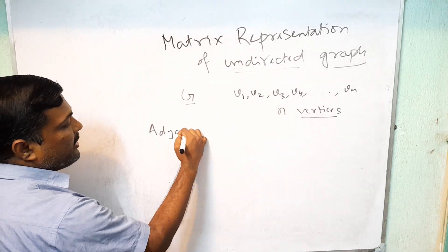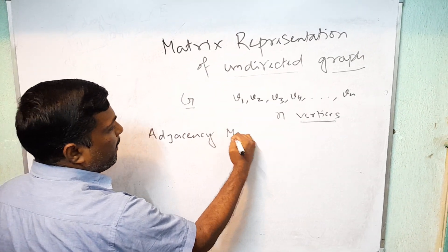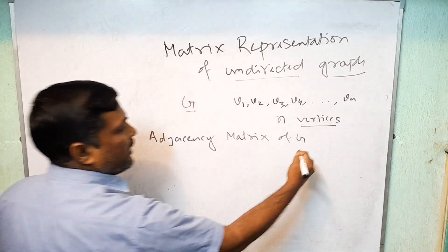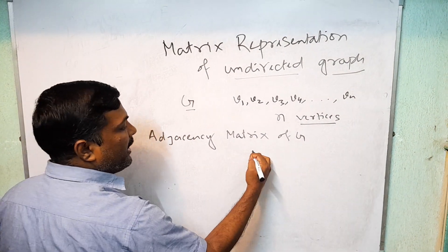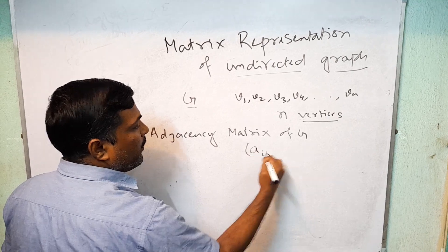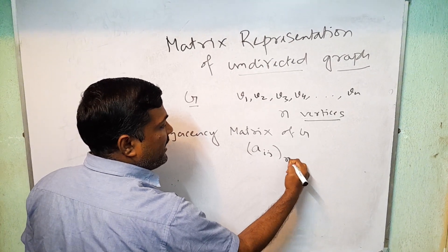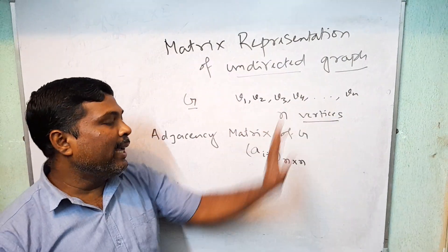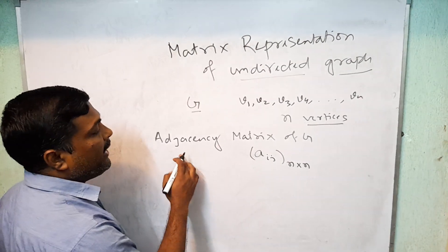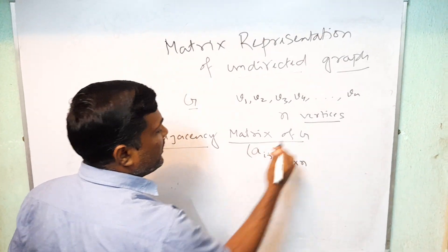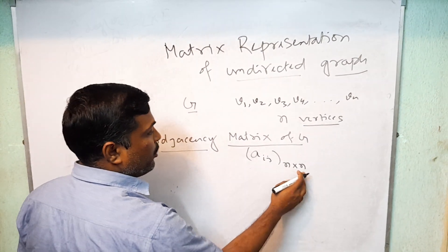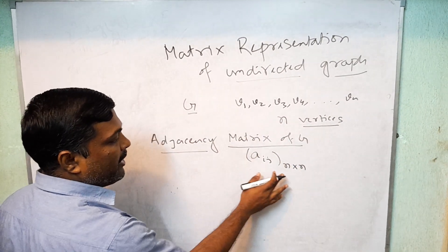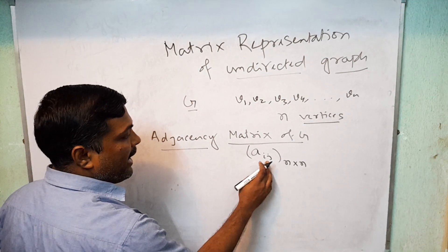Suppose the adjacency matrix of this graph G is Aij, and the order of this matrix is n×n. This graph G has n vertices V1, V2, ..., Vn, so the corresponding adjacency matrix is a square matrix of order n.